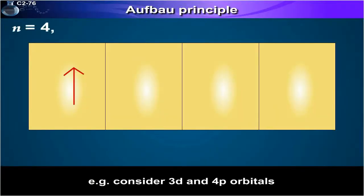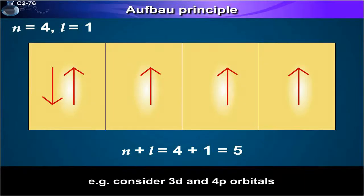For 4p, n is equal to 4 and l is equal to 1. Hence n plus l is equal to 4 plus 1 is equal to 5.